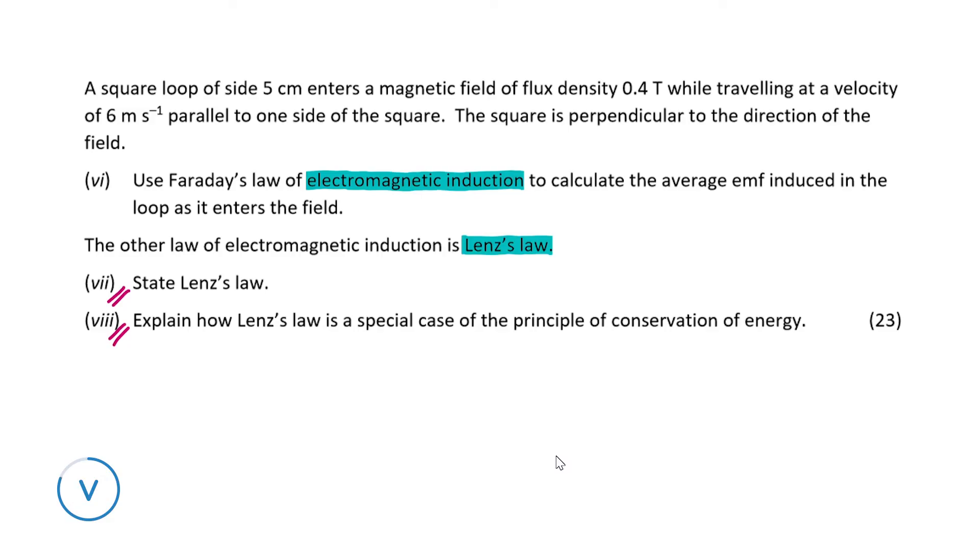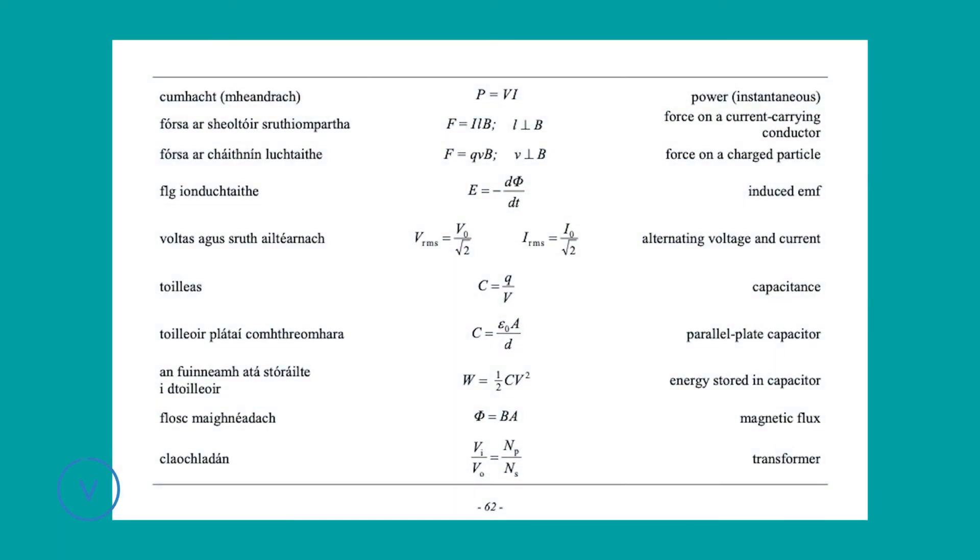Moving back to our main question, we have a square loop of side 5 centimeters. It enters a magnetic field of flux density 0.4 tesla and it's traveling at a velocity of 6 meters per second parallel to one side of the square. The square is perpendicular to the direction of the field. All this information will be needed for part 6 of this section of our question. Now before conducting this calculation, we turn again to page 62 of the formulae and tables book where we will be looking at the formula for induced EMF and the formula for magnetic flux.